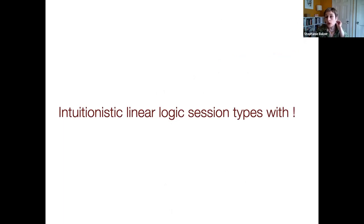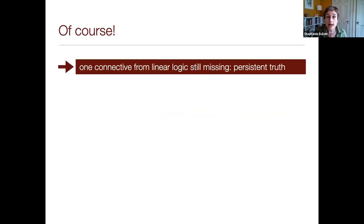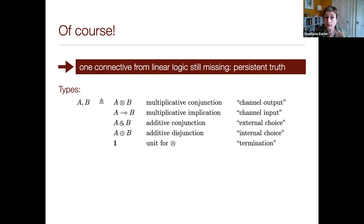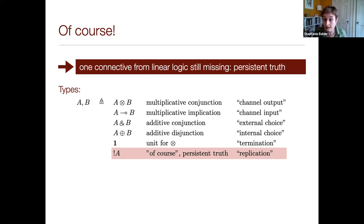So now let's explore persistence. Those of you familiar with linear logic might have noticed there's one connective still missing: the persistent truth, bang A, or 'of course,' that we have not yet accommodated. The operational semantics is that of replication. Let me briefly provide an introduction, but I'm not going to dive very deeply because I want to spend enough time on shared sessions, which really give us the expressiveness needed in practical programming scenarios.